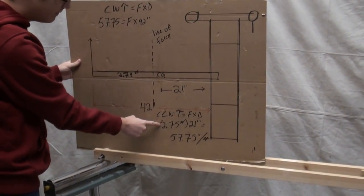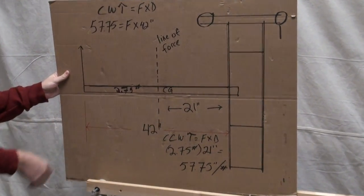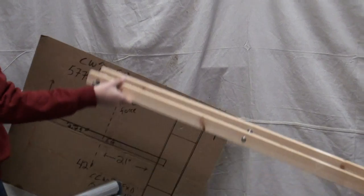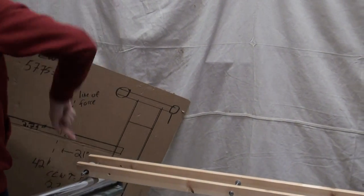Multiply that by its weight and we get 57.75 inch pounds of torque. So that's the counterclockwise torque. It goes down, it goes like hands of a clock, that way.